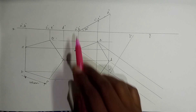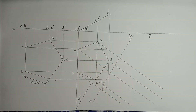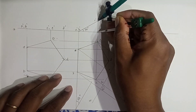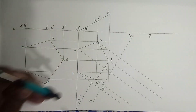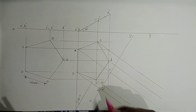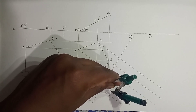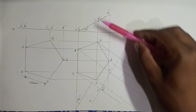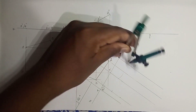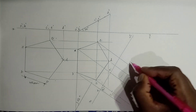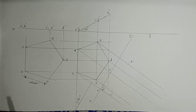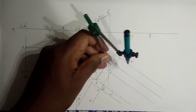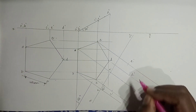Next, B is also on the XY line, so here we get B1-dash. The next distance is for C — we take the C distance from XY and place it on the projector of C from X1Y1. The C distance from XY is equal to the E distance, so we pick up the same distance and mark it on the projector of E, giving us C1-dash and E1-dash. Then we pick up the D-dash distance from XY and place it on the projector of D on X1Y1, giving us D1-dash.